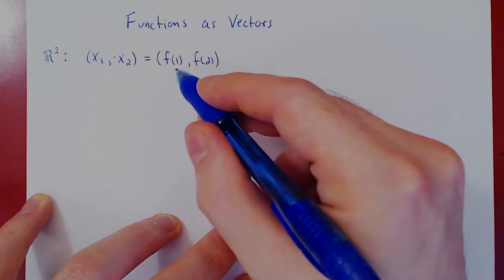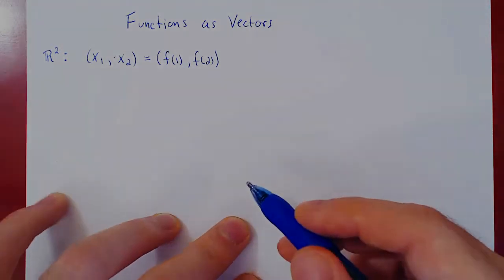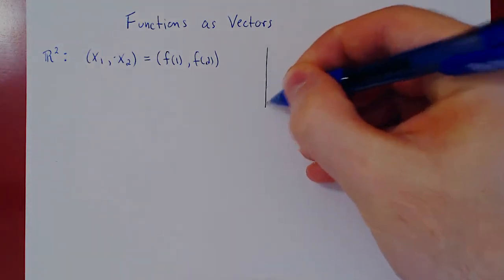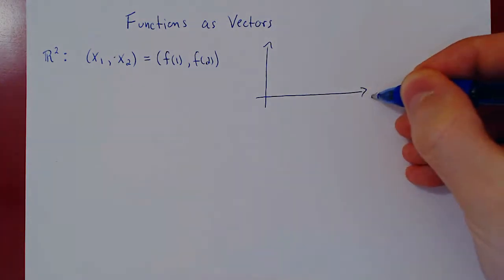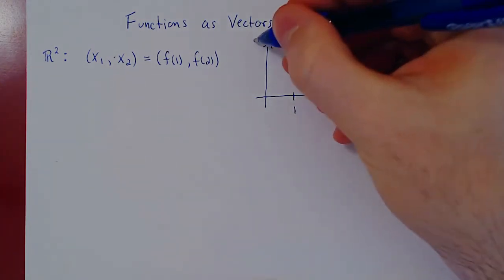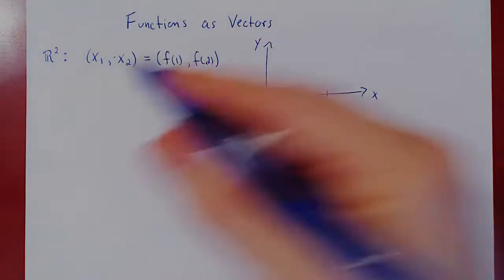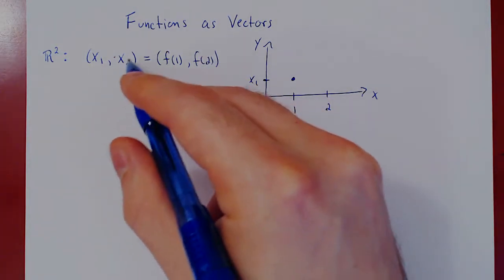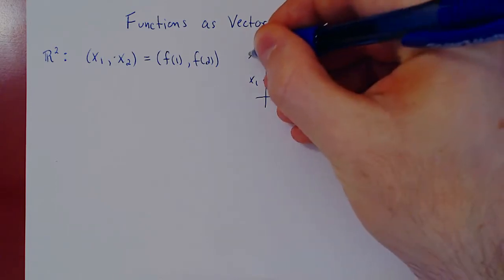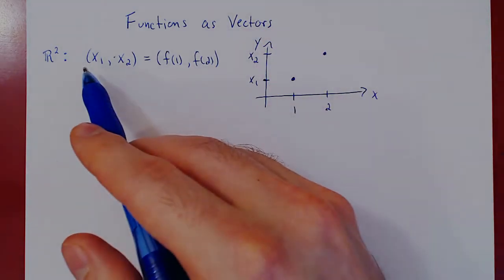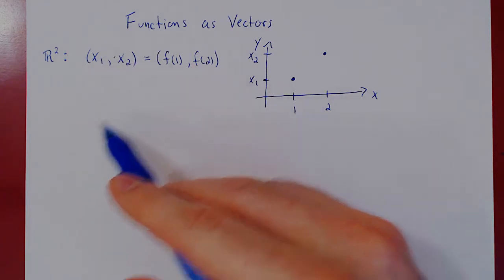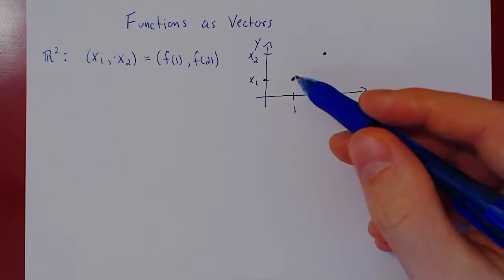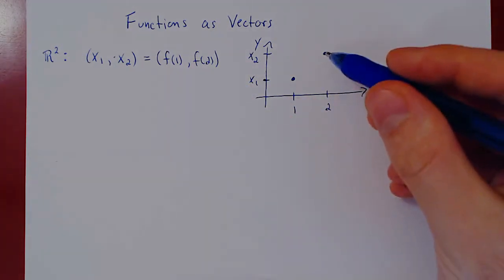So we have a function defined at only two real values — the first two positive integers. You can now view this vector in R2, which is a directed line segment, as the graph of a very simple function that is only defined on the first two positive integers, 1 and 2. The value assigned at x=1 is x1, and the value assigned at x=2 is f(2), the second coefficient of the vector. Quite naturally, a vector in R2 is a real function defined only on the first two positive integers.